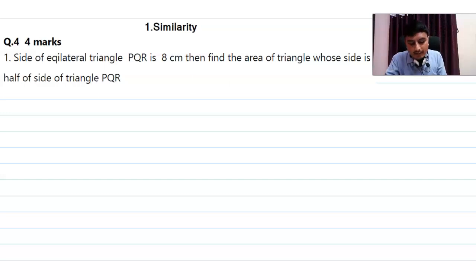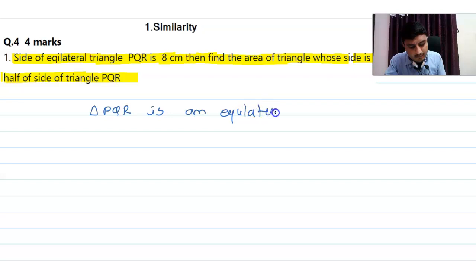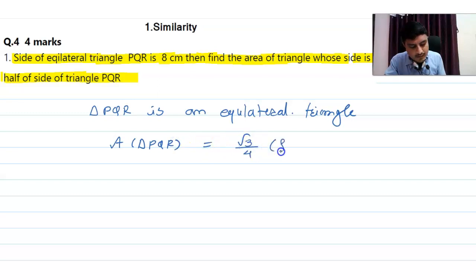Look at the first question: the side of an equilateral triangle PQR is 8 centimeters. Find the area of a triangle whose side is half of the side of triangle PQR. Since triangle PQR is equilateral, the formula for area of an equilateral triangle is: area = (√3 / 4) × side².